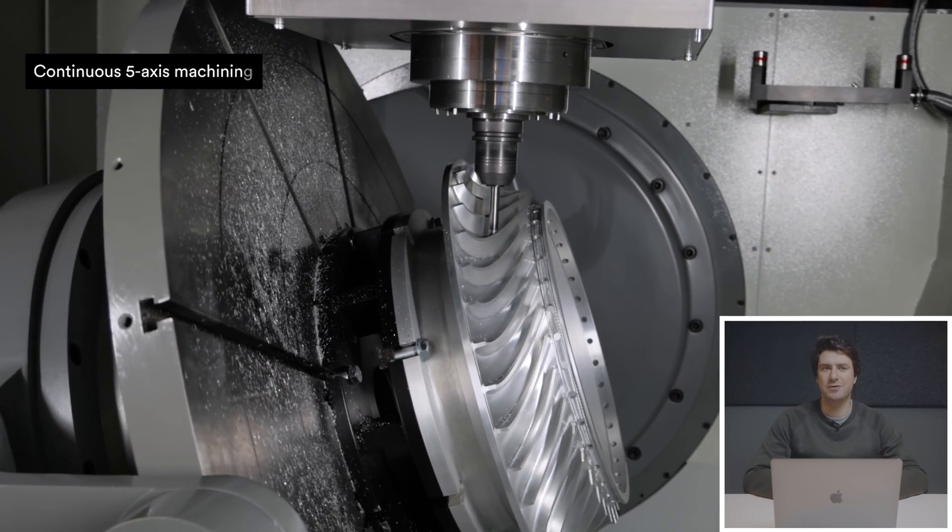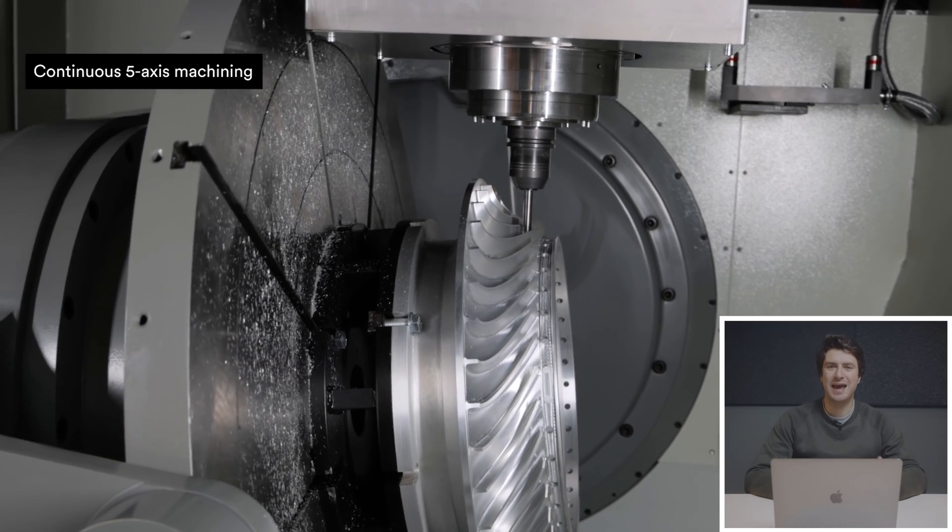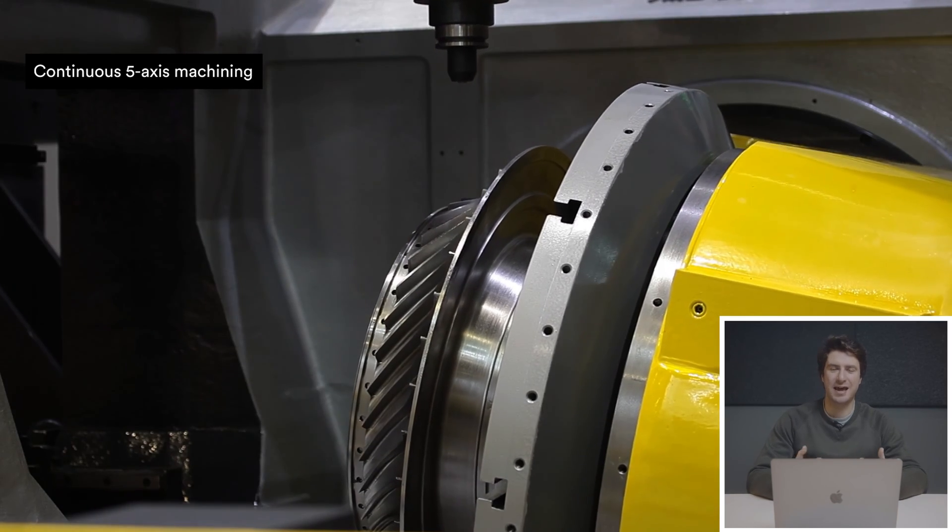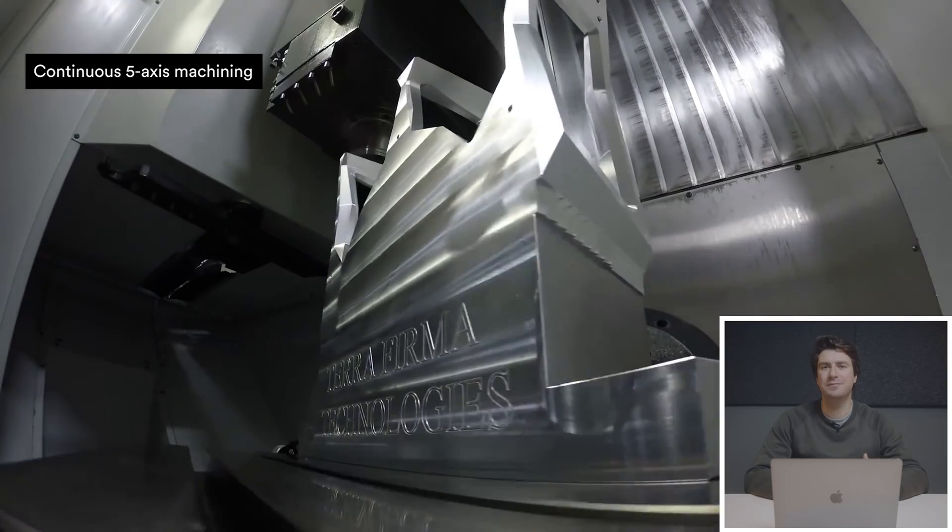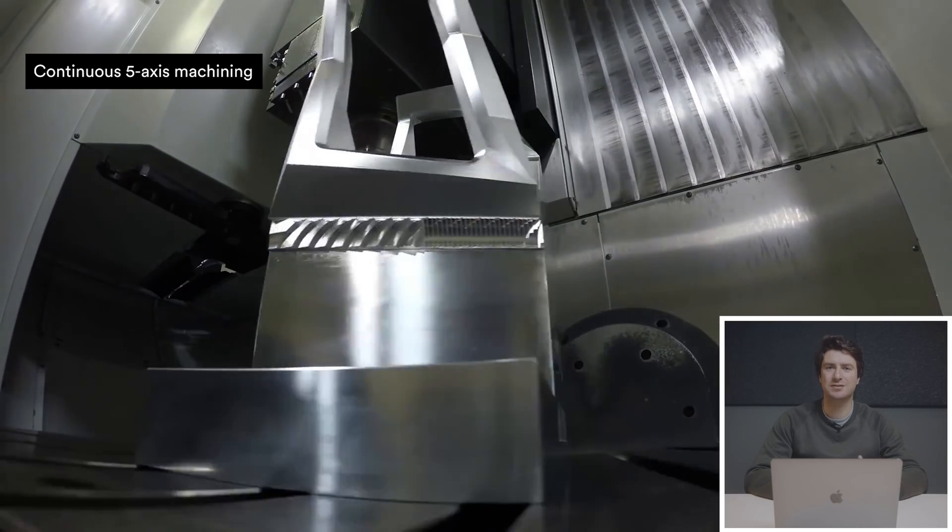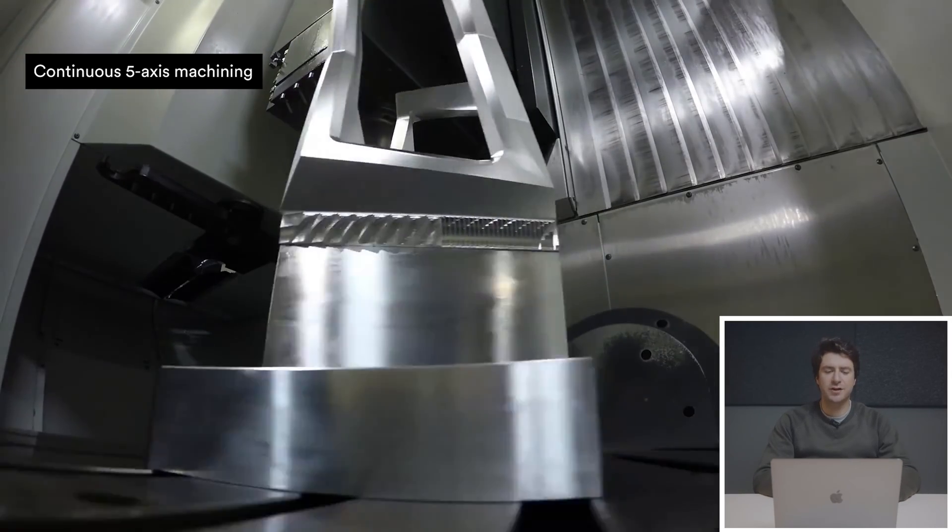In 5-axis machining, instead, we have two additional axes, which are the A axis and the B axis. The A axis rotates around X and allows the rotation front or back, while the B axis allows the rotation around Y, so the rotation left or right. If we look at the video here, we can see how the part is being moved around.